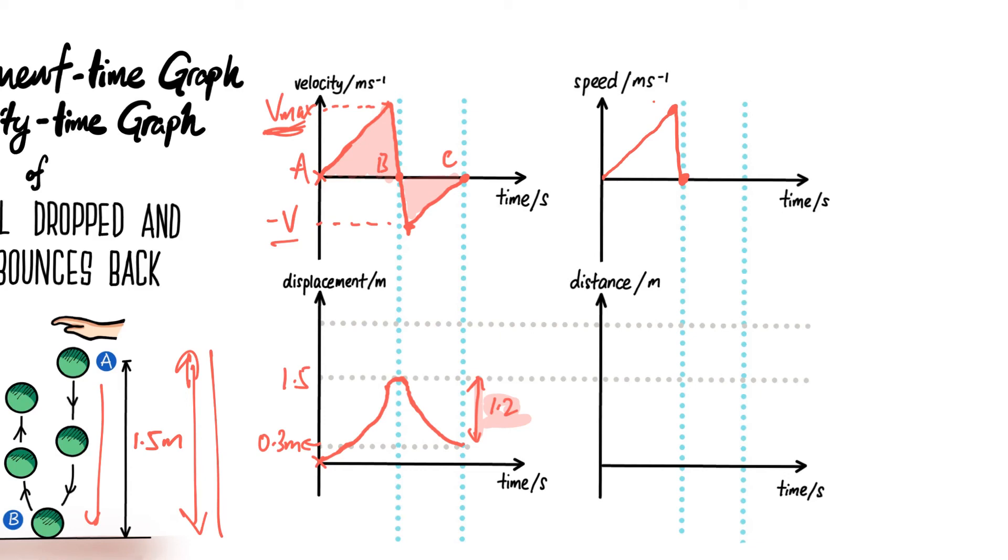...it will be different because speed is a scalar; there's no negative portion. So basically you will draw here, and then it will rebound with this speed, and then as it goes up, the speed gets smaller and smaller until at point C over here. This is point B, and this is point A.